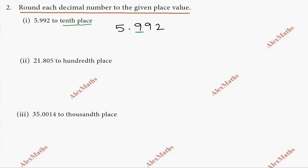Look at the right side of the underlined digit — it is 9. Since 9 is 5 or more, increase the underlined value. The underlined digit is already 9, so 9 plus 1 is 10. Write 0 and carry over 1. Now we have 5.9 becoming 5 plus carry: so 6.0. The answer is 6.0.